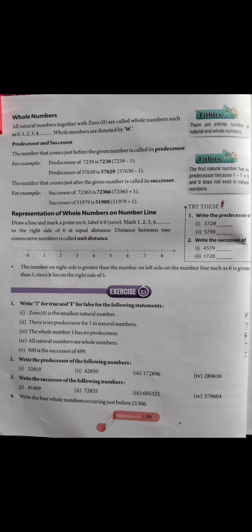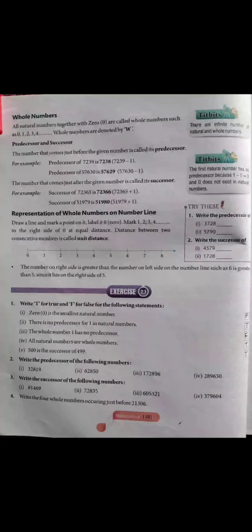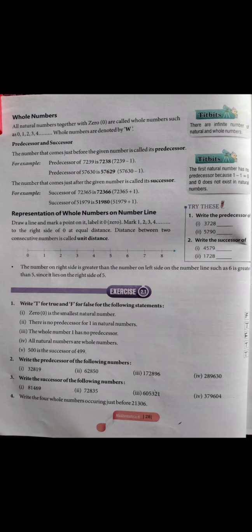Ab hum dekhte hain predecessor and successor. Predecessor is the number that comes just before the given number. Means koi bhi number jo kisi number ke pehle aata hai usse hum predecessor kehte hain. For example, what is the predecessor of 5?